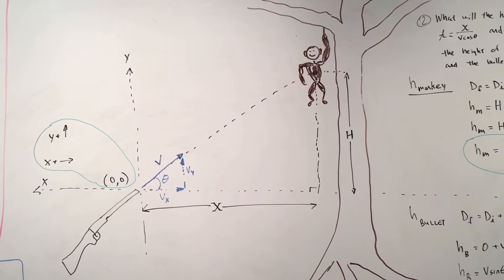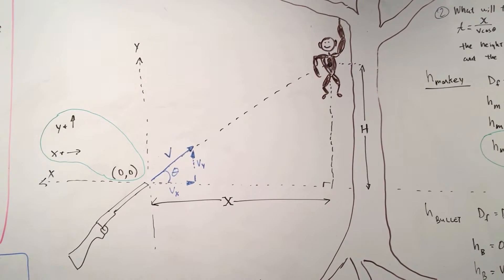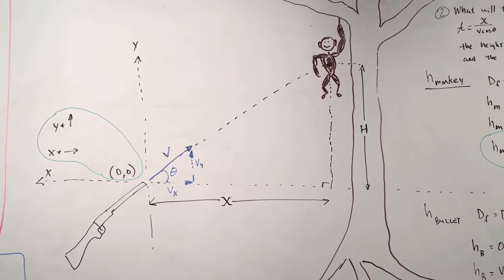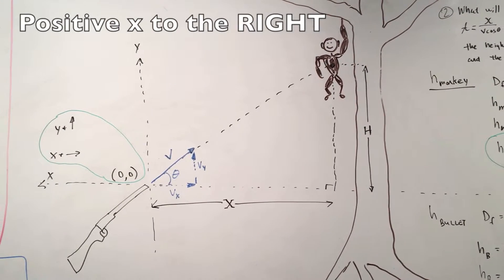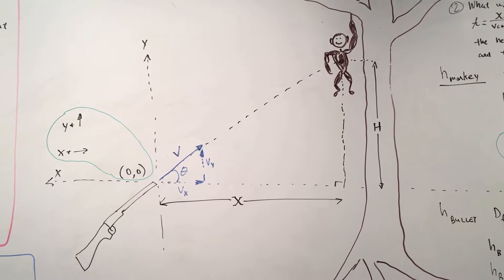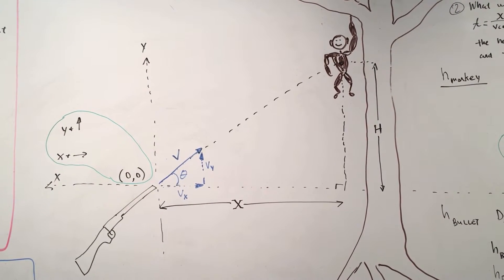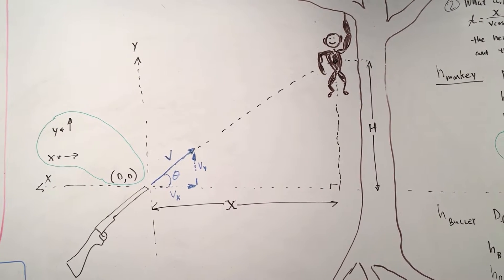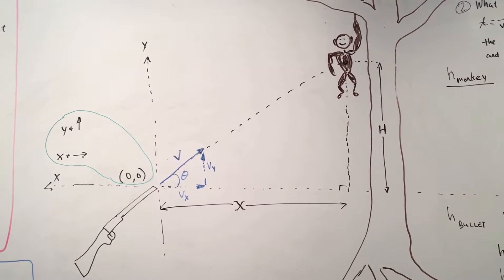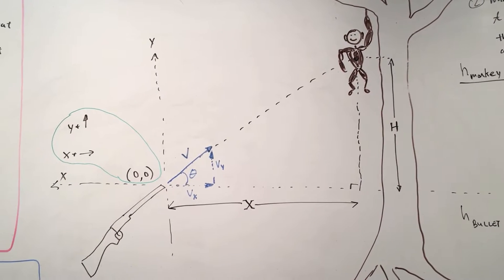So here's a schematic of what's going on. The origin's at the tip of the barrel. The gun is aimed at the monkey. To the right is positive X. Up is positive Y. The monkey is X meters away, or the tree is. And then the monkey's height is H. The velocity out of the barrel is V. And you can see you can break it into components VX and VY using theta.